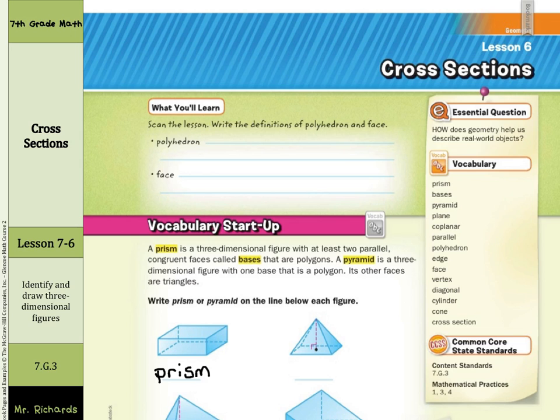What about our next shape? Well, we have a base that's a polygon. It looks to be a square or rectangle, but the faces are all triangles, and since these faces are all triangles, this is what's called a pyramid.